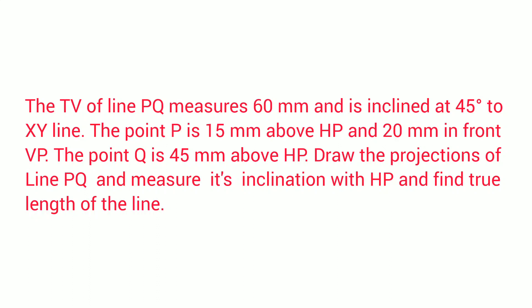This is a problem where the top view length of the line is given as 55 mm and it is inclined at 45 degrees. So the length of the top view line is given along with its angle — that is, angle beta is given. Apart from that, the locations of point P and Q are given in the question.